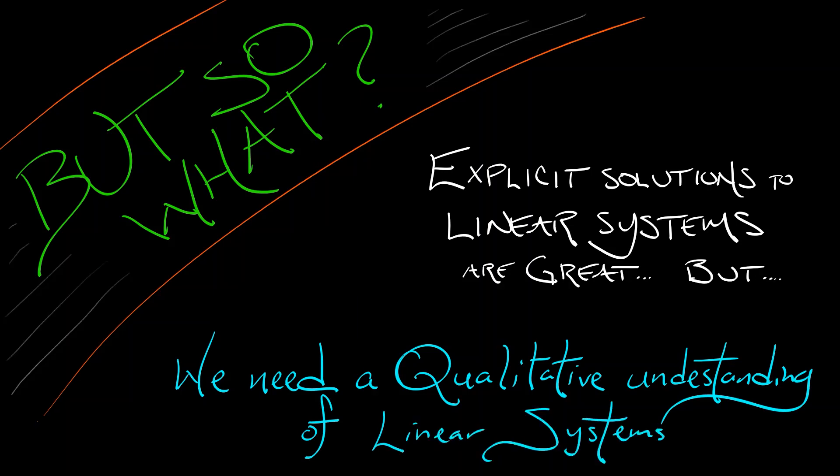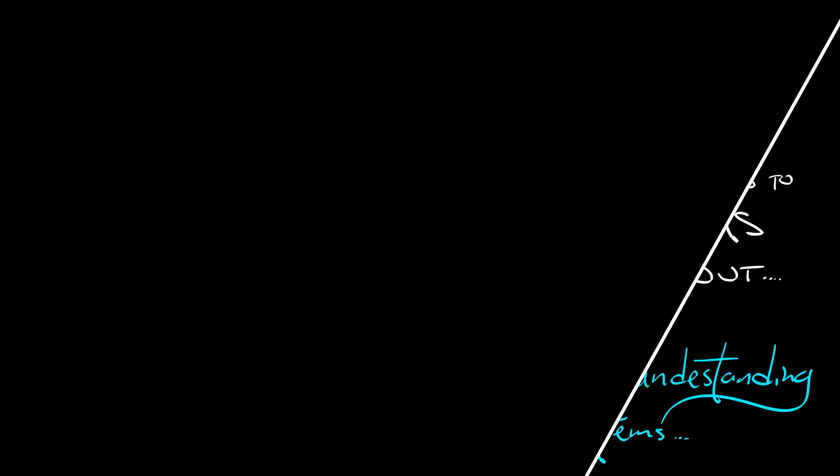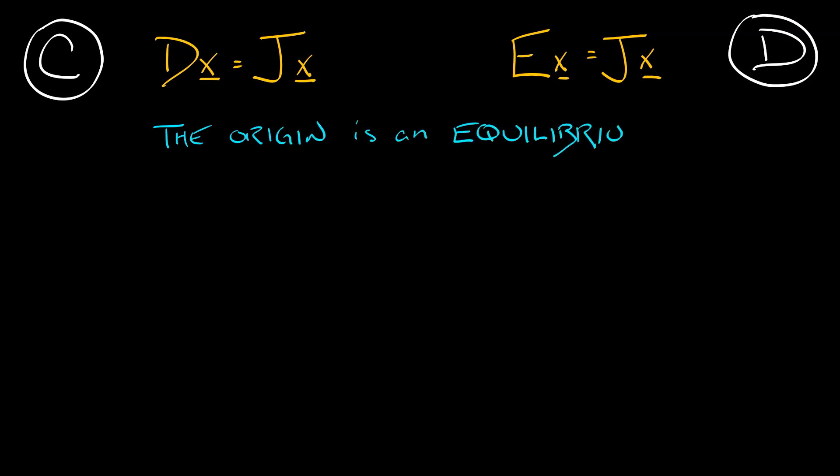If you've got a linear system, continuous or discrete time, that's written in Jordan form—dx equals Jx or Ex equals Jx—then in this system the origin is an equilibrium. It's usually the equilibrium unless it's a totally degenerate system. And those Jordan blocks are giving you the explicit eigenspaces associated to eigenvalues.